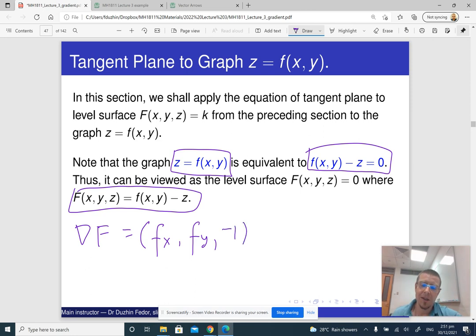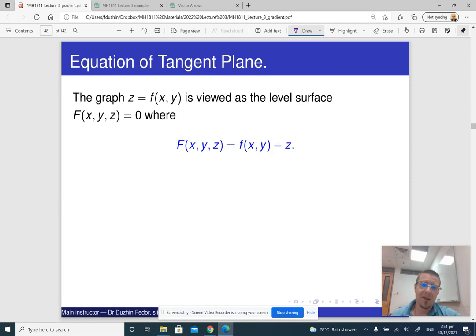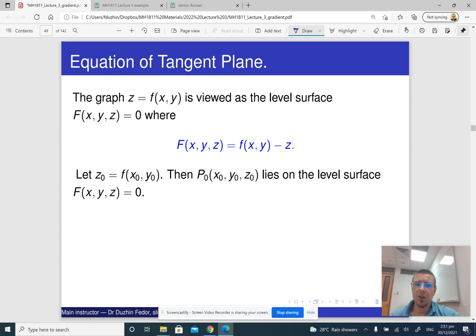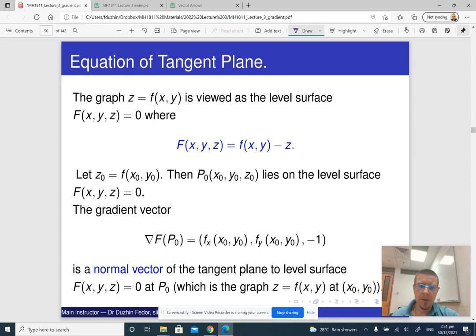So that's basically it. So then we just apply this and rearrange a little bit. And then we just get the result. We just need to view our graph of a function of two variables as a level surface. And here is the gradient vector.